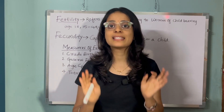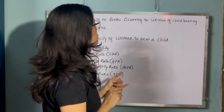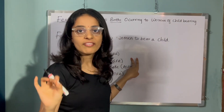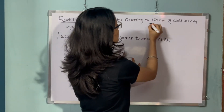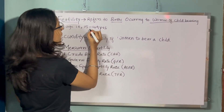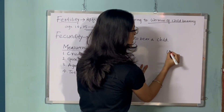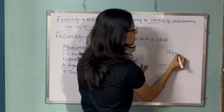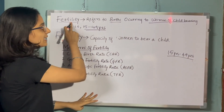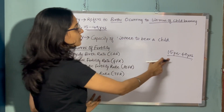Today we will be studying entirely about what is fertility. Fertility refers to birth — specifically births occurring to women of childbearing age, that is 15 to 49 years. So fertility is nothing but births occurring to women of childbearing age 15 to 49.